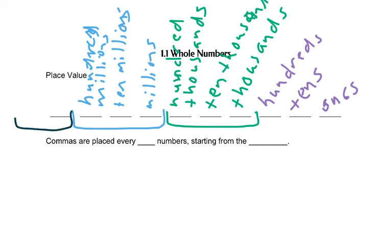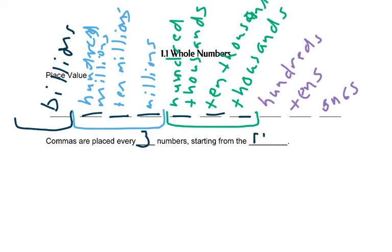And then there would be another group of three — it always is in groups of three and it always repeats: ones, tens, hundreds, and then whatever the group name is after it. So we have one thousands, ten thousands, hundred thousands, one millions, ten millions, hundred millions. And the next group would be billions: one billion, ten billions, hundred billions. We place commas every three numbers starting from the right to separate those groups.